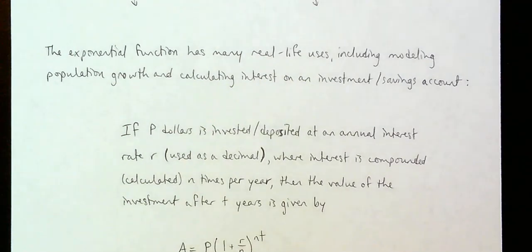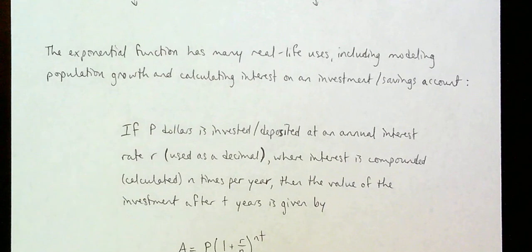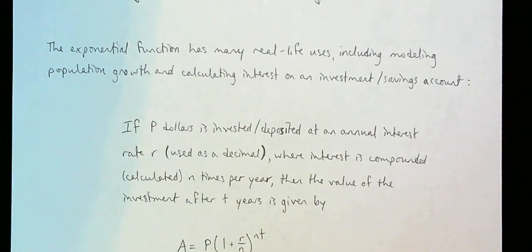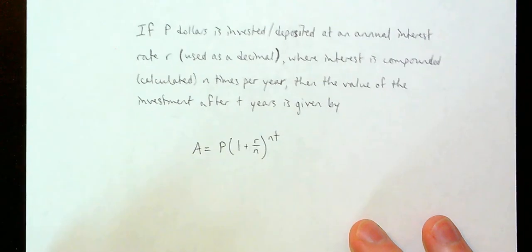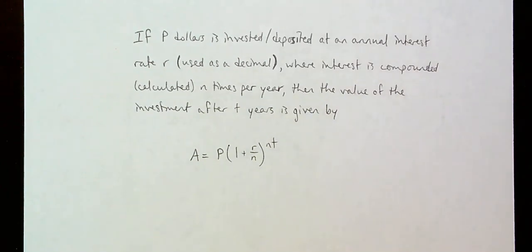In particular, with the example on calculating interest on an investment or savings account: if you invest or put P dollars into something — a savings account, other investment, whatever — and if it pays you an annual interest rate R in decimal form, not percentage, and interest is compounded or calculated N times per year, then the value of your account after T years is given by the formula: P times the quantity 1 plus R over N, raised to the power N times T.